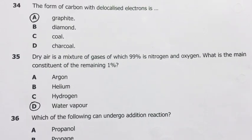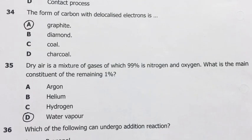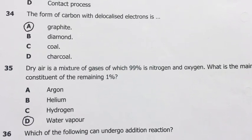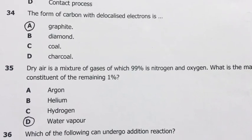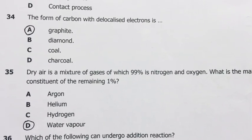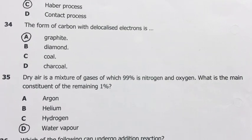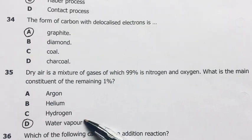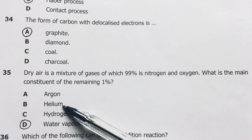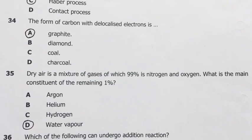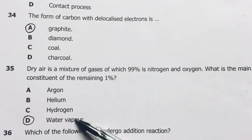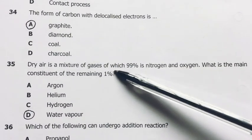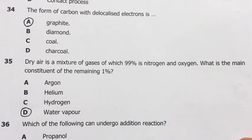Number 35. Dry air is a mixture of gases, of which 99% is nitrogen and oxygen. What is the main constituent of the remaining 1%? Water vapor. These are very, very, very minimum. But the water vapor is the one that covers this extra 1%.